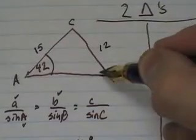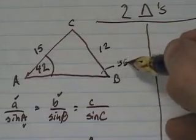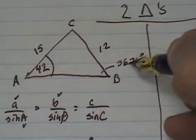So I go back up to my picture and I can add that to my picture if I want to. This will be 56.76 degrees.